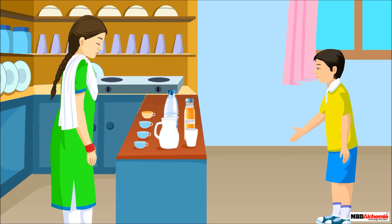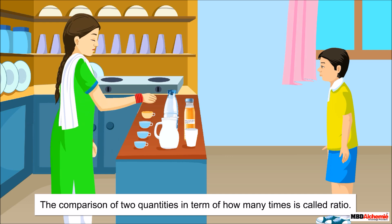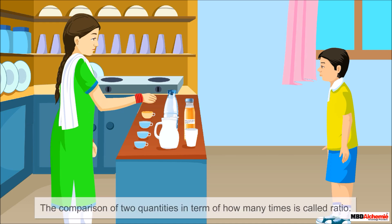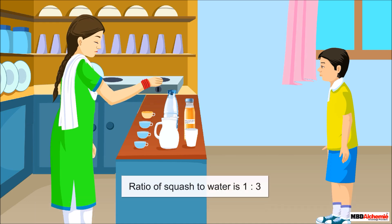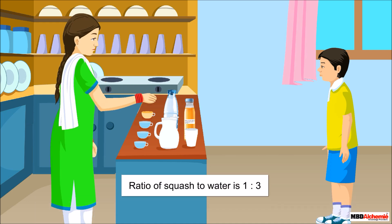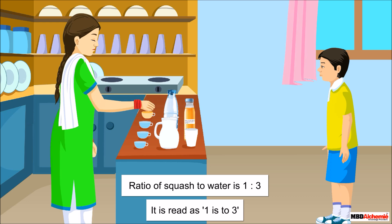You know, here you are comparing using ratios. The comparison of two quantities in terms of how many times is called a ratio. Here, the ratio of squash to water is one is to three, and it is read as one is to three.